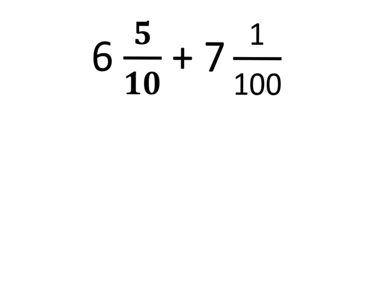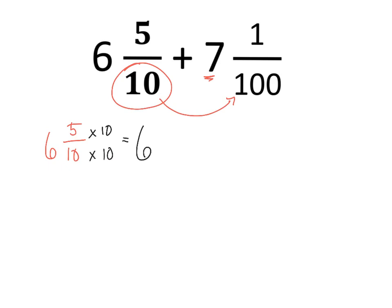Next one: we get 6 and 5 tenths plus 7 and 1 hundredth. Very similar to what we did before, but now we're adding a whole number of 7. So what we have to do is rename this denominator and get it into the hundredths. So, 6 and 5 tenths — we are going to multiply the top and the bottom by 10 to get to that hundredth. There is my 6 wholes and my 50 hundredths. And we're going to add that with our 7 and 1 hundredth, to get 6 plus 7 is 13 wholes.